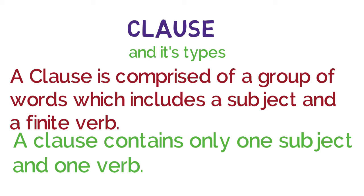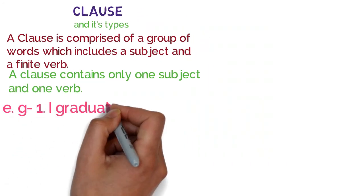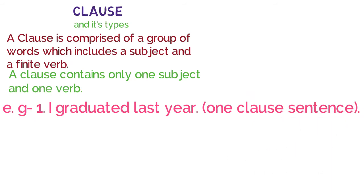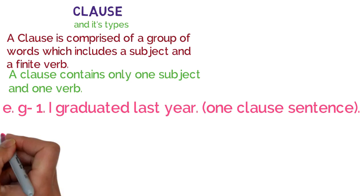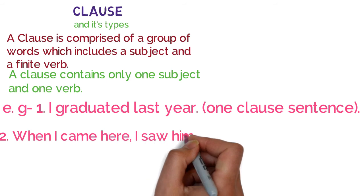Clause, jise hindi mein khand bhi kaha jata hai, clause mein words ka group shamil hota hai jis mein ek subject aur ek verb include hota hai. For example: 'I graduated last year' — meinne pichle saal graduation kiya. Is sentence mein single verb aur single subject hai, is liye ye one clause sentence hai.